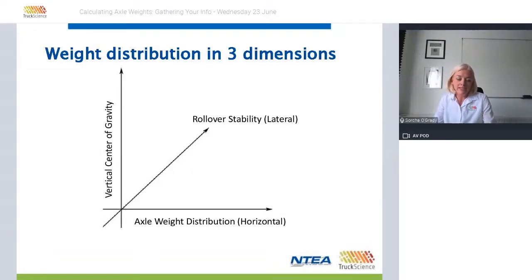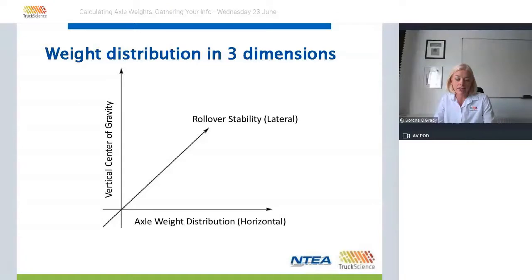A comprehensive weight study will examine weight distribution in three dimensions: calculating horizontal or axle weight distribution, vertical center of gravity, and lateral weight distribution or rollover stability. While these are all calculated by the Truck Science program, we're going to concentrate on horizontal or axle weight distribution today. Vertical and lateral distribution will be covered in more detail in later webinars.